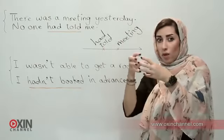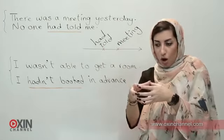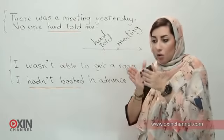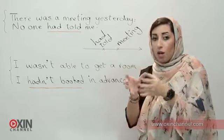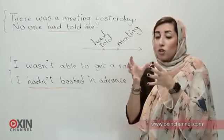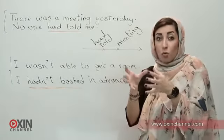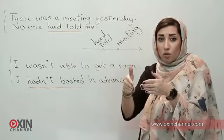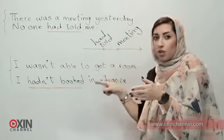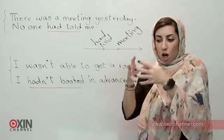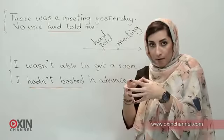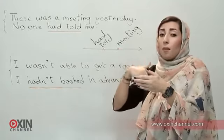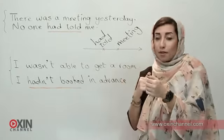Again, I wasn't able to get a room — I went to the hotel, that's the main event. I couldn't get a room. Why? Because before going to the hotel I hadn't booked a room. So I'm talking about a main event, and I want to go before that main event — something had or hadn't happened.